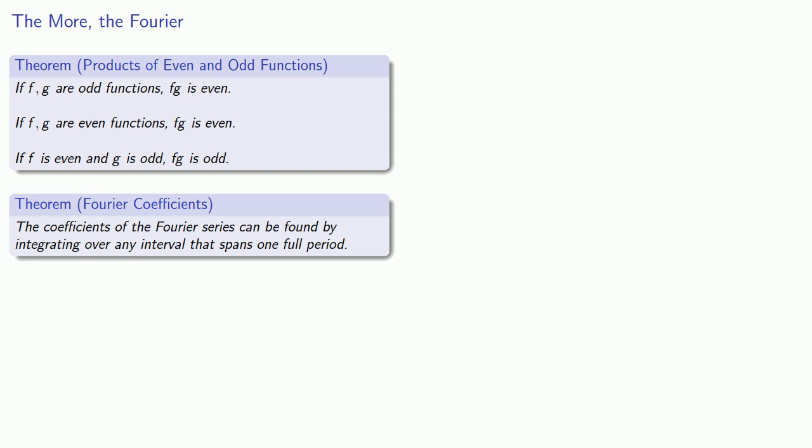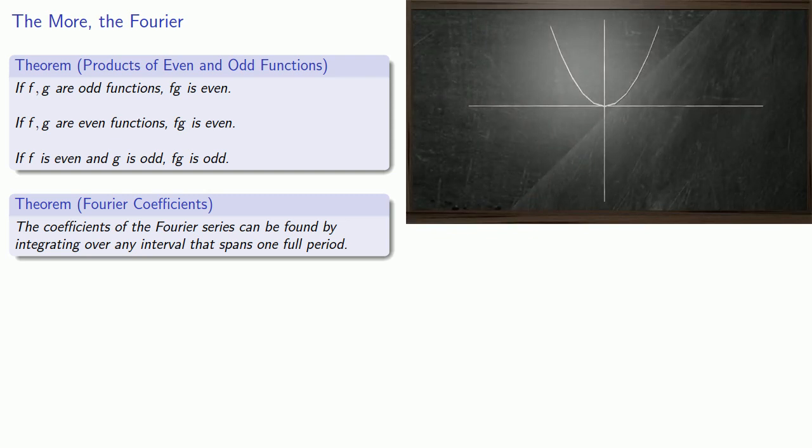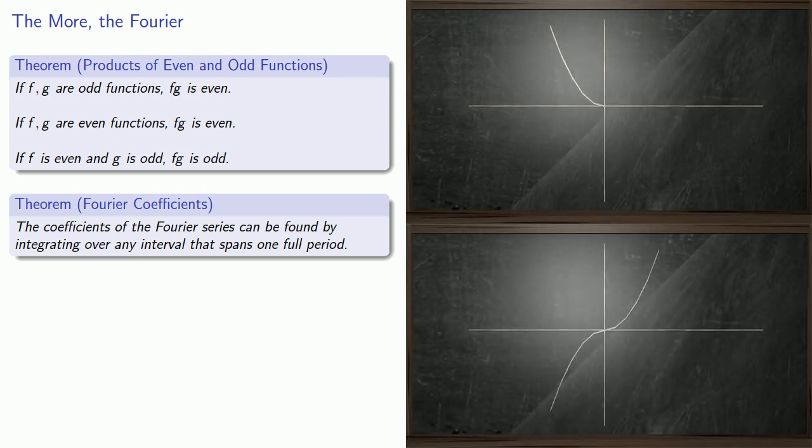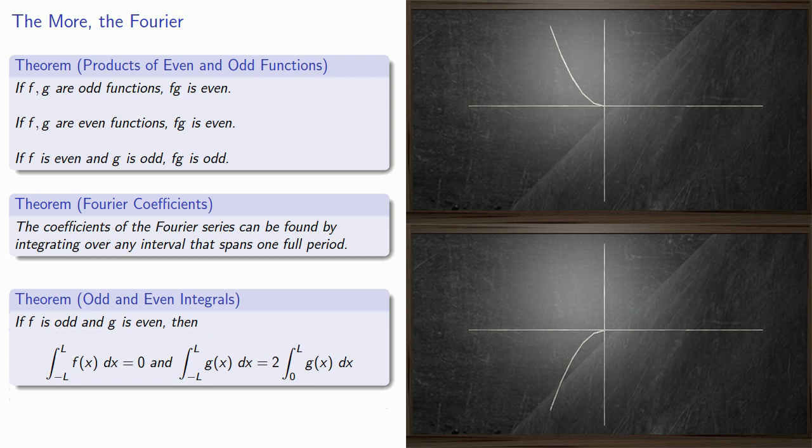Odd and even functions are reflected in the graphs of the function and correspond to certain symmetries, which means that they also correspond to certain simplifications on the definite integral. In particular, if f is odd and g is even, then the integral of an odd function over an interval symmetric about the origin is guaranteed to be zero. And the integral of an even function over an interval symmetric about the origin is twice the integral from zero to the endpoint.